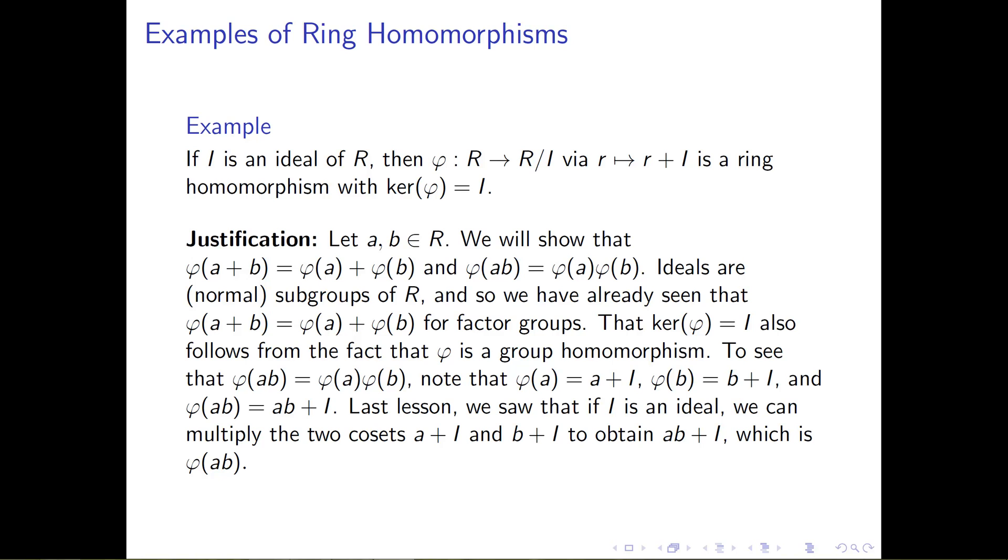So, what we need to check is that φ of the quantity a times b is equal to φ of a multiplied by φ of b, where in the first parentheses, φ of a times b, we're saying take the multiplication that's happening inside the ring,